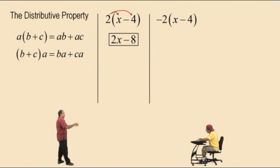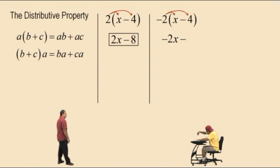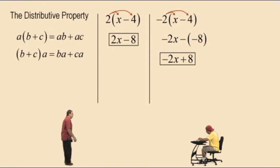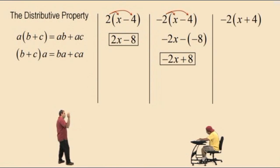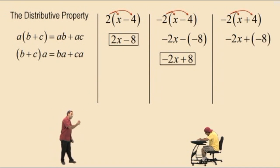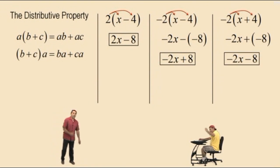Next: negative 2 times the quantity x subtract 4. Negative 2 times x is negative 2x, bring down the subtraction, and negative 2 times 4 is negative 8. So negative 2x subtract negative 8 is the same as negative 2x plus 8. For negative 2 times the quantity x plus 4: distribute to get negative 2x, operation is addition, and negative 2 times 4 is negative 8. Adding negative 8 is the same as subtracting 8, so the answer is negative 2x subtract 8.